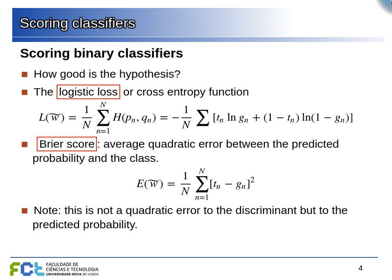The Briar score is a mean squared error between the probability that our hypothesis assigns to an example and the class of that example. If the probability of belonging to class one is close to one and the example belongs to class one, we get a low error. If the probability is small but the example belongs to class one, or if the probability is high but the example belongs to class zero, we get a large error. This is a more generic score applicable to any classifier that outputs probabilities.